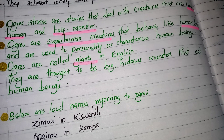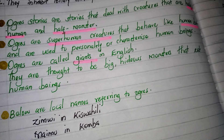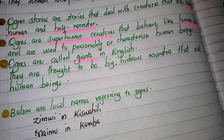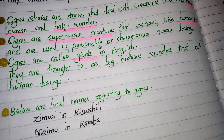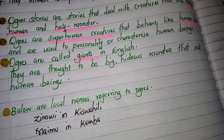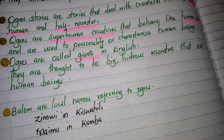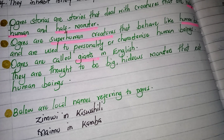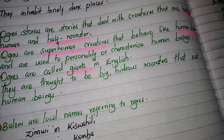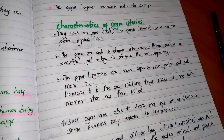Ogres are superhuman creatures that behave like human beings and they are used to personalize or characterize human beings. Ogres are called giants in English and they are thought to be big hideous monsters that eat human beings. For example, we have some local names referring to ogres in our country, like Zimu in Kiswahili, and the Kamba people call them Maimu.